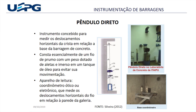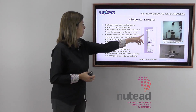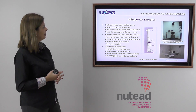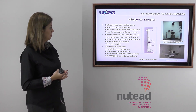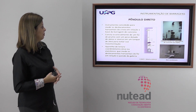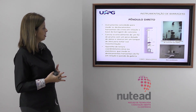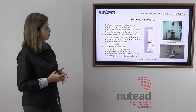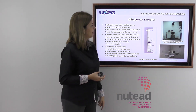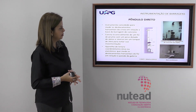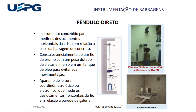O pêndulo direto é um instrumento mais antigo concebido para medir os deslocamentos horizontais da crista em relação à base da barragem. É um fio de prumo com peso, dotado de aletas imerso num tanque de óleo para evitar sua movimentação. A leitura é feita através de um coordenômetro óptico ou eletrônico. Aqui há um detalhe de um pêndulo direto no laboratório de concreto de Itaipu. Esse instrumento já não tem mais sido tão utilizado nas barragens mais novas.